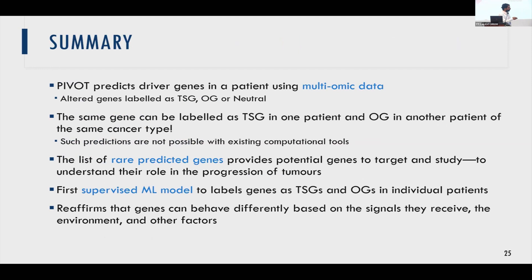In summary, PIVOT predicts driver genes in individual patients using multiomic data and labels genes as tumor suppressors, oncogenes, or neutral genes. Most importantly, the same gene can be labeled as a tumor suppressor in one patient and an oncogene in another patient of even the same cancer type — something not possible with existing computational tools. Our strength comes from using multiomic data. The rare predicted genes are valuable for biologists investigating tumor etiology, and this is the first supervised ML model to label genes as both tumor suppressors and oncogenes, reaffirming that genes behave differently based on their environment and received signals.